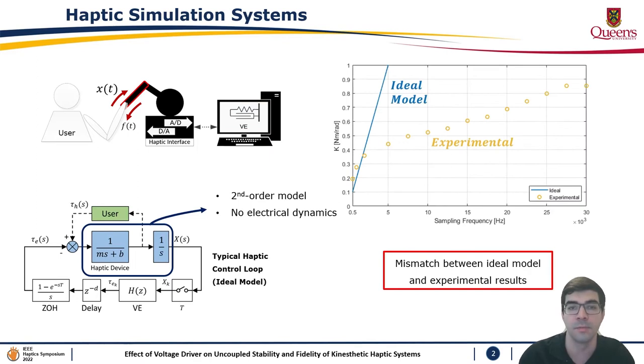However, as can be seen on this plot of stiffness versus sampling frequency, there is a mismatch between the ideal model and the experimental results conducted in a one-DOF platform.